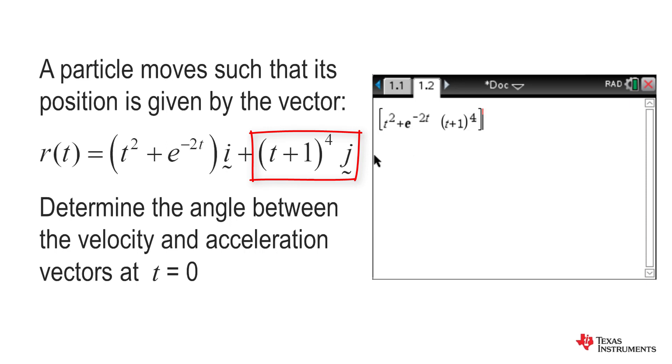What we can do now, we can store it by pressing Ctrl-Store as our position vector r. So the calculator remembers it is r.